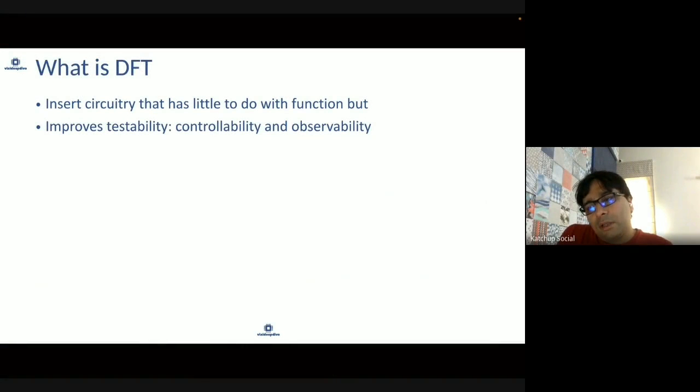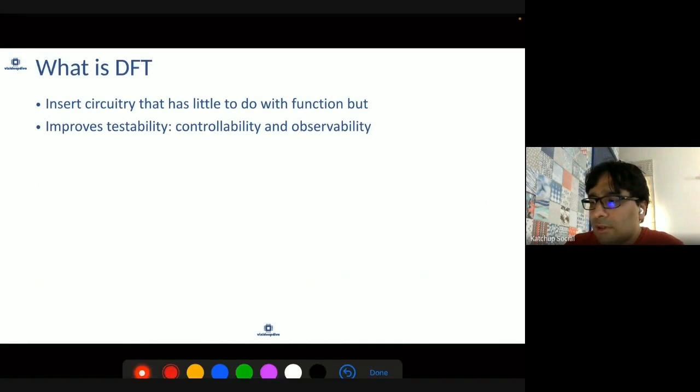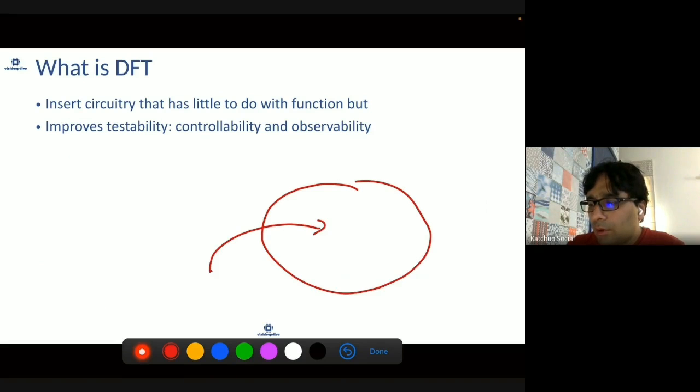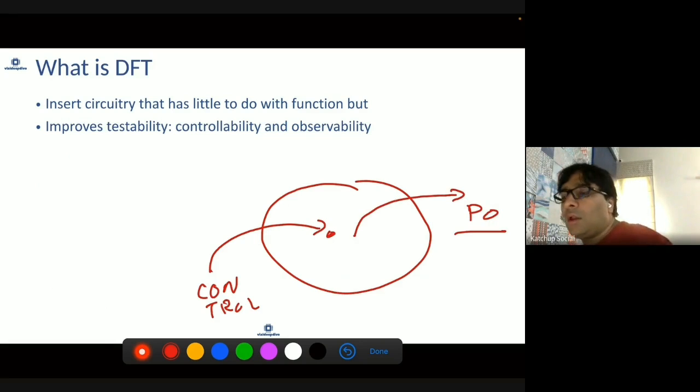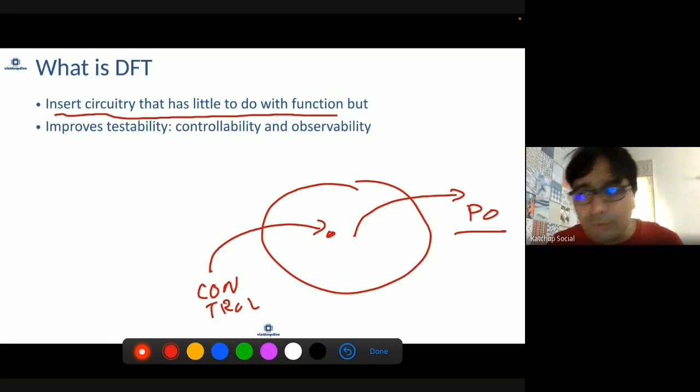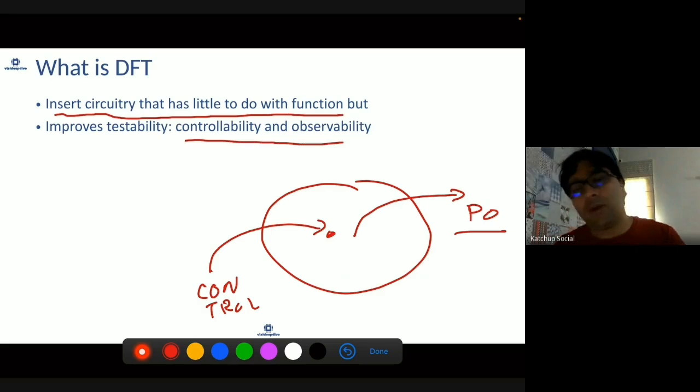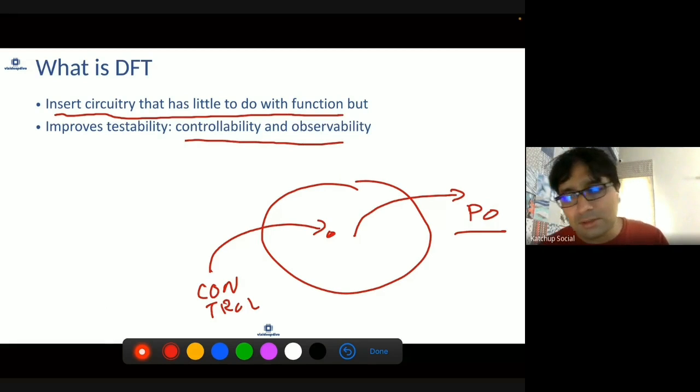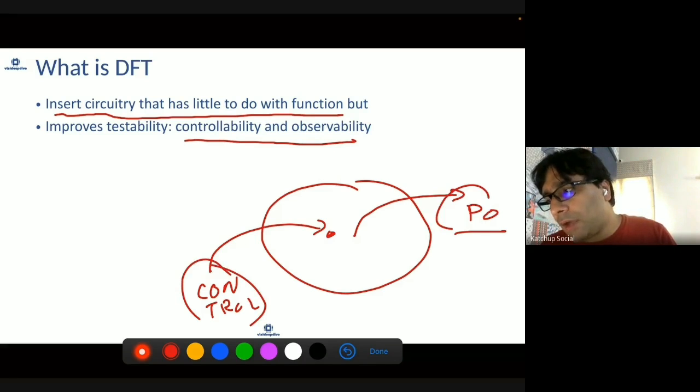We saw that controllability and observability are important aspects for testability. The ability to control a node so it can have a specific value is important, and the ability to then observe that on primary output. Both of these are important to test. What is done to ensure that is you add additional circuitry that has very little to do with the functionality of the design, but it improves the controllability and observability of the design. That is known as DFT or design for testability. You are designing your design in such a way to improve your controllability and observability of the design, and for doing that, you add additional circuitry in the design.